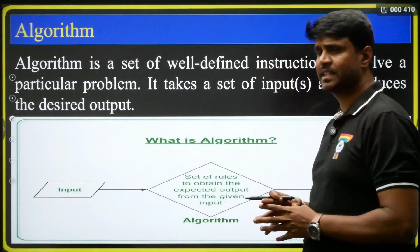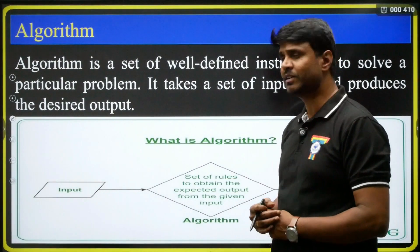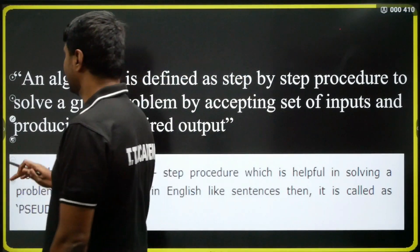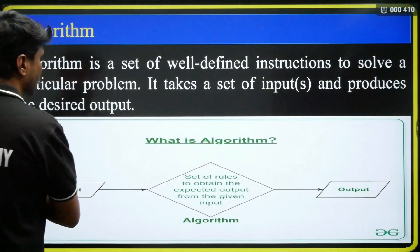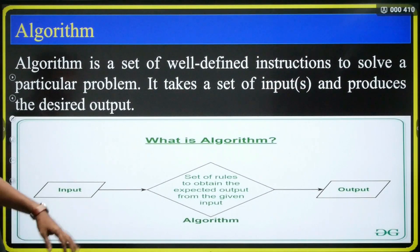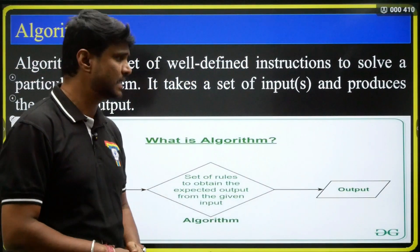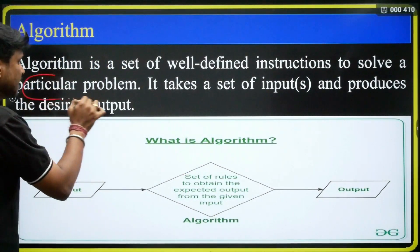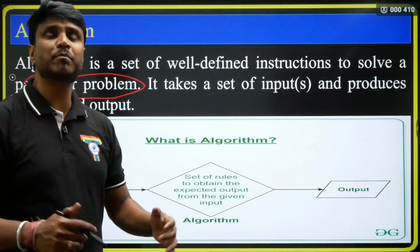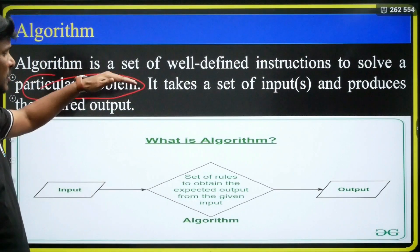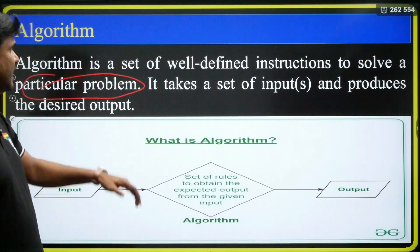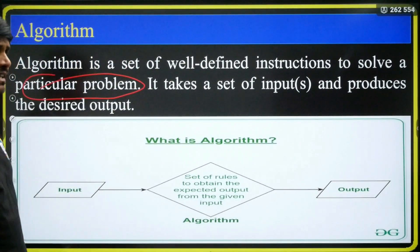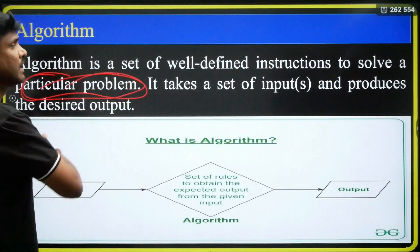When I come to the definition, how can I define an algorithm? In simple definition, we can say: algorithm is a well-defined instruction. Algorithm is well-defined instructions to solve a particular problem. This is the first definition. Any well-defined instructions to solve a particular problem.